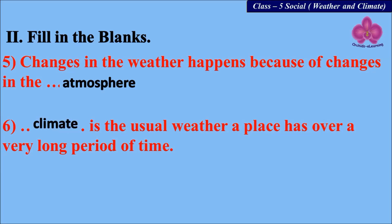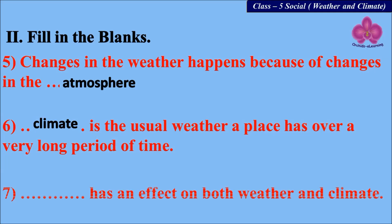Number six: dash is the usual weather a place has over a very long period of time — the answer is climate. Number seven: dash has an effect on both weather and climate — the answer is latitude.